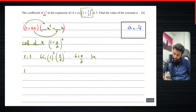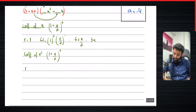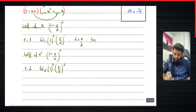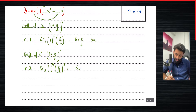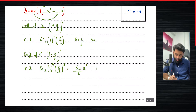Now we want the coefficient of x squared from the same expansion (1 + x/2)^6. For this, r should equal 2, giving us 6C2 × 1^4 × (x/2)^2. So 6C2 is 15, multiplied by x squared upon 4 — I've ignored the 1^4 since it makes no difference. So what we have is (15/4)x squared.